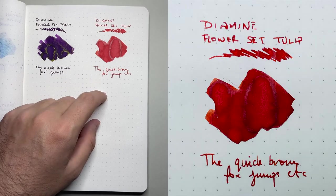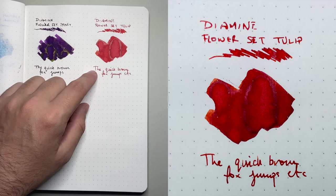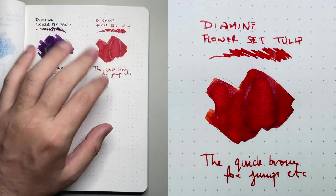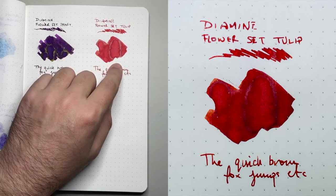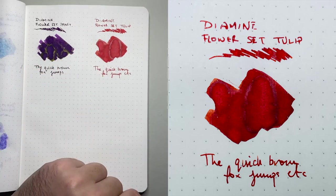And then one of my personal favorites from the set is Tulip, which is an orangey red. It's not super, super red, but it's certainly in the red family. It's got some nice little sheen there, shades beautifully. Once again, it performs really well. One of my favorites from the set.